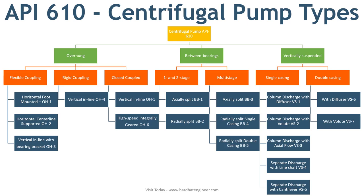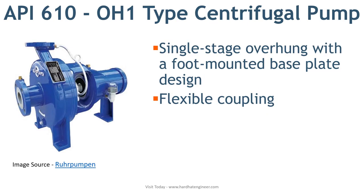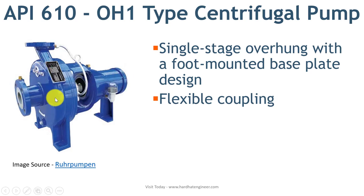Let's start with OH type API 610 pumps. The first is OH1 type pump. OH means overhung. This is a single stage overhung pump with foot mounted base plate design. It is a horizontal pump with flexible coupling. Here you can see the support — this is overhung, and the support holds the pump at the opposite end of the shaft.